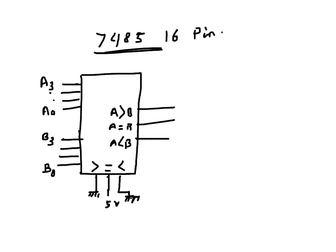If we want to compare numbers which are more than four bits, maybe eight bit numbers or even six bits, we have to just cascade these ICs. So again we will have another IC of 7485.